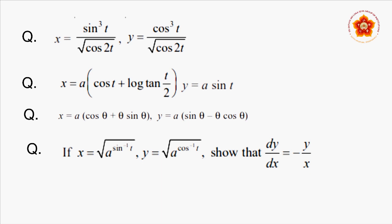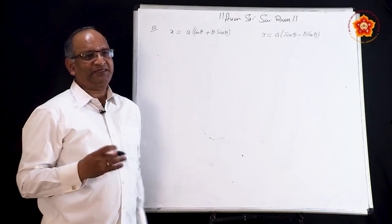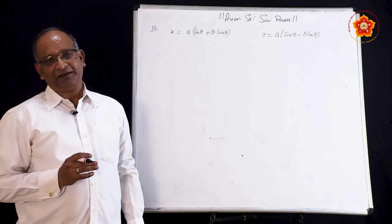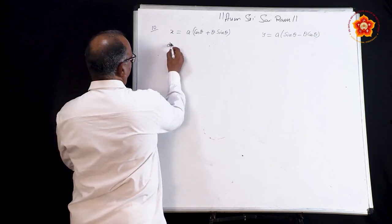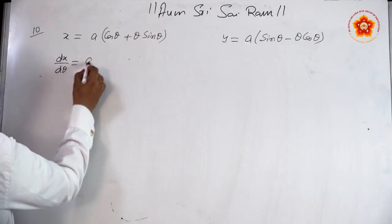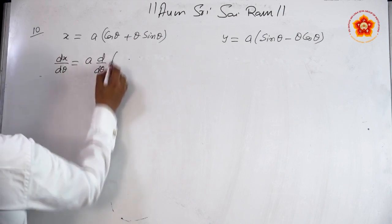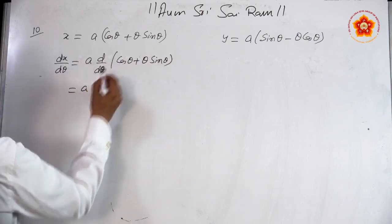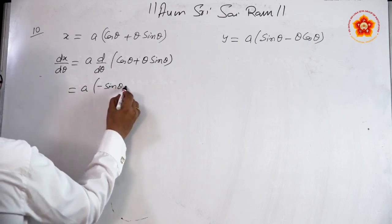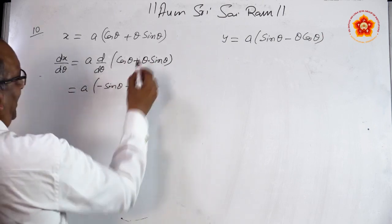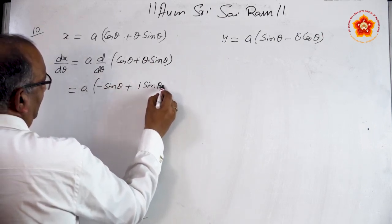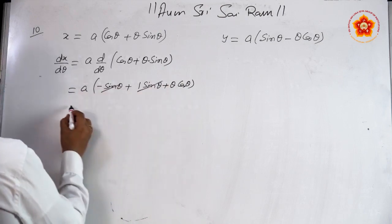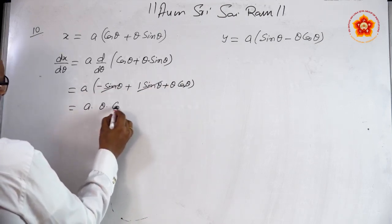Let us look at this problem. Here x and y are expressed in terms of theta, so theta is the parameter. Find dx/dθ. A is a constant. We want to find d/dθ of (cos θ + θ·sin θ). The derivative of cos θ is minus sin θ. Applying the product formula to θ·sin θ: d/dθ of θ is 1, times sin θ, plus θ times the derivative of sin θ which is cos θ. Minus sin θ and plus sin θ cancel, giving a·θ·cos θ.